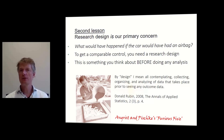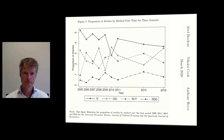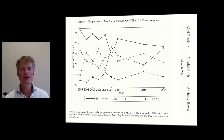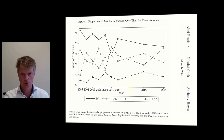Basically, what Angrist and Pischke do in their textbook is teach you five research designs — their 'furious five.' Looking at how these have been used in some of the best economics journals over recent years, the most popularly used is the instrumental variables design, which we'll start discussing in week three. The least used is the regression discontinuity design, discussed in week four. Difference-in-differences is covered in week five, and randomized control trials — RCTs — are discussed next week.